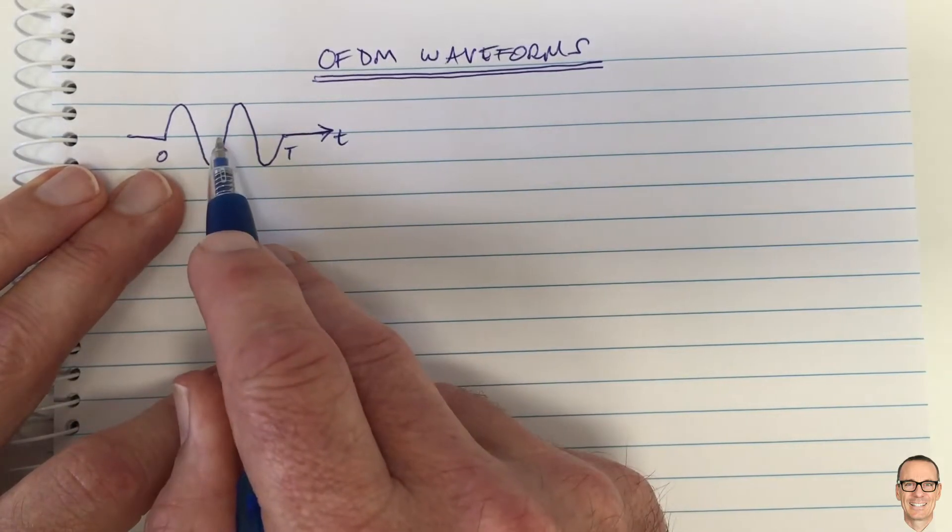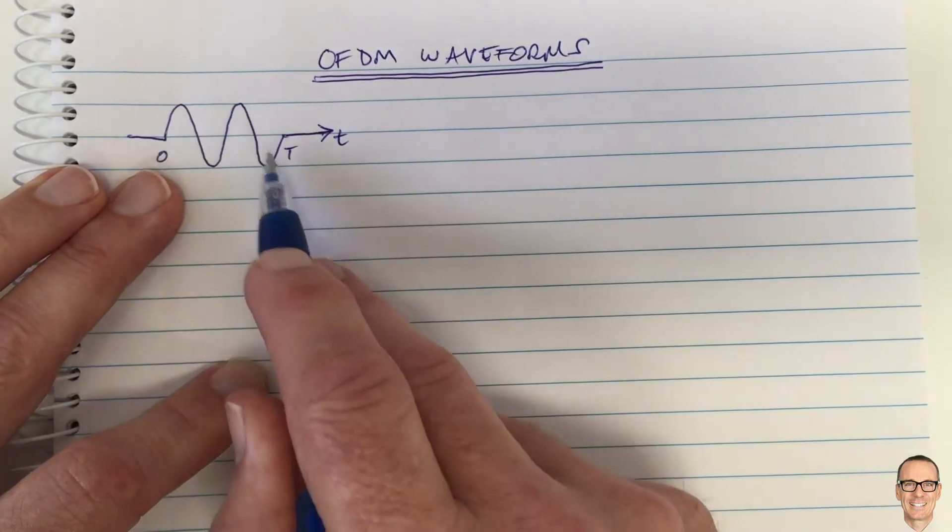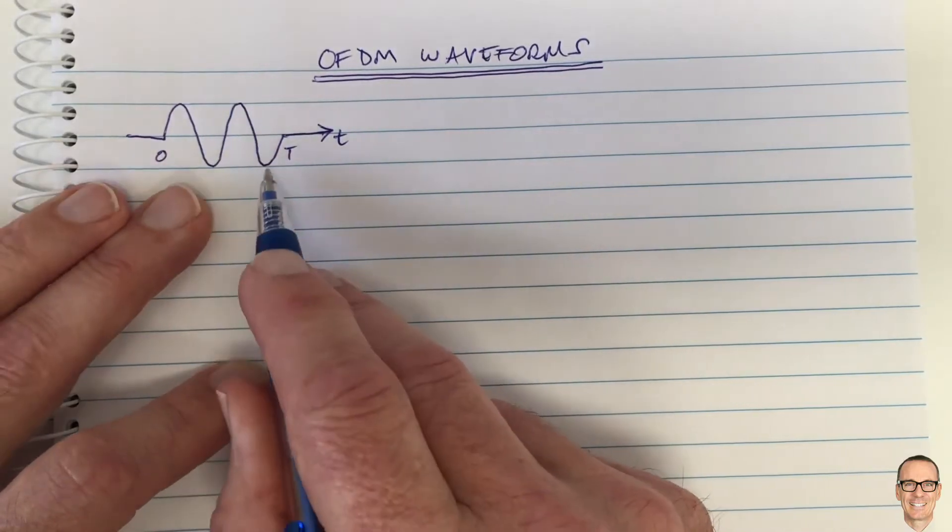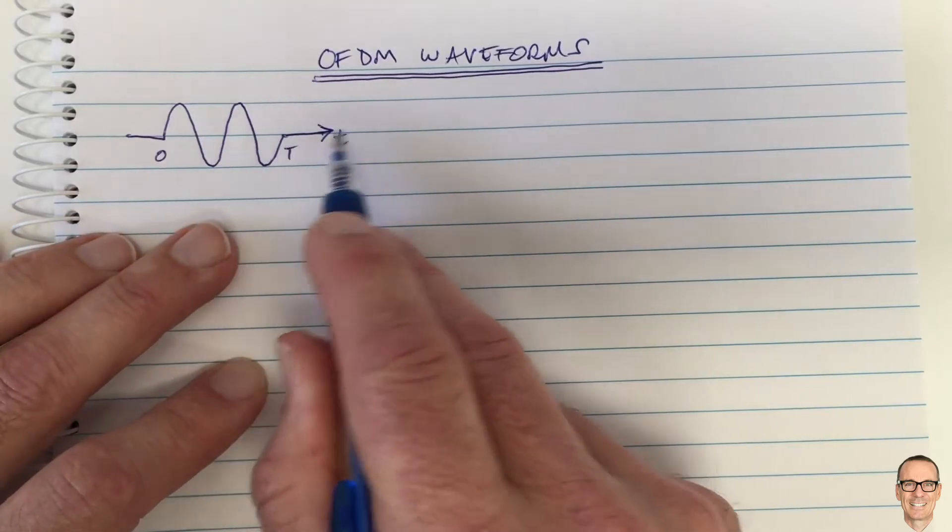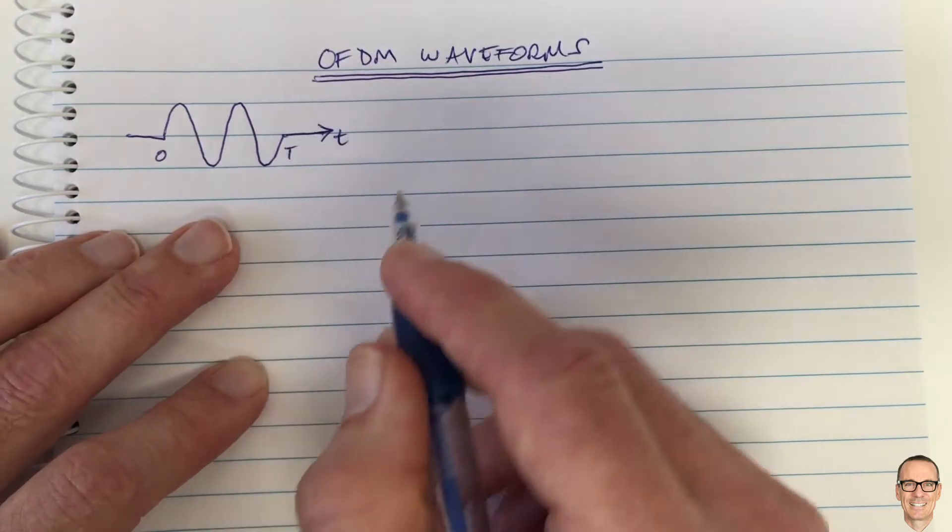We're going to send either a one or a zero by sending this waveform or the inverse of this waveform, the negative, and that's some digital data. Then at the next time slot we'll send more data and so on.